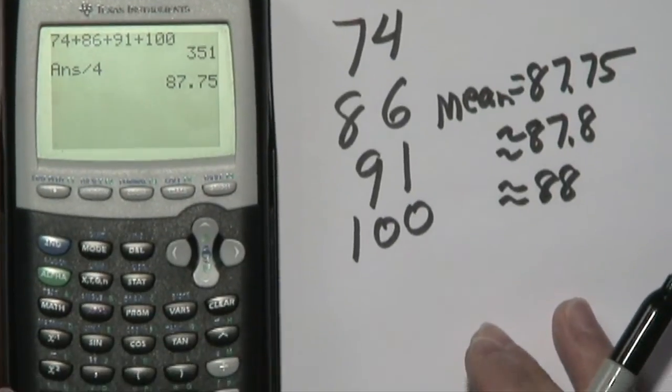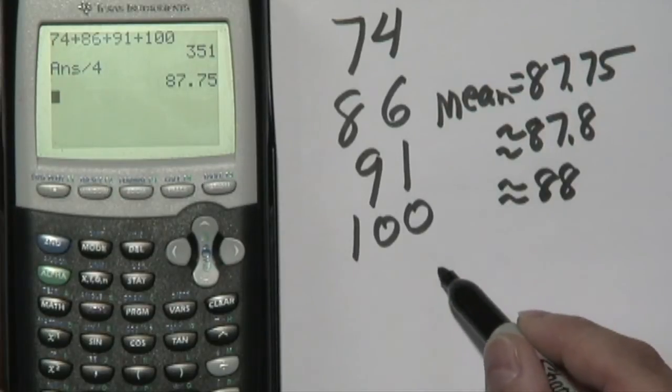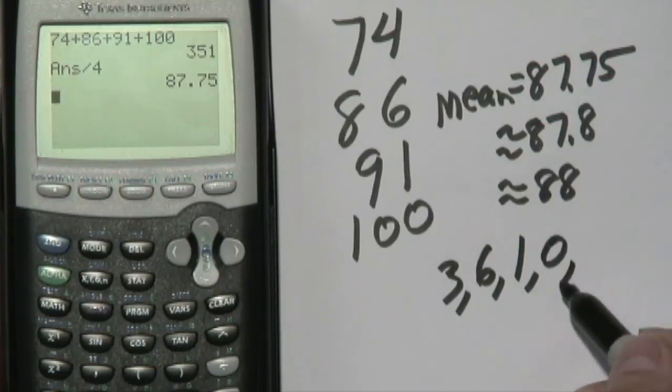Now if you want to do another one real quick, suppose you have numbers that are smaller. So you were doing quiz scores: 3, 6, 1, 0, and 5.